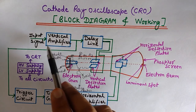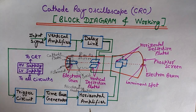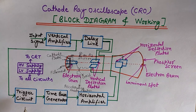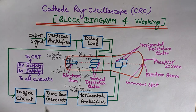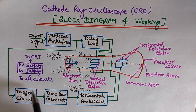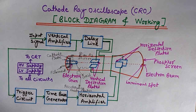After the delay line, the input signal is applied to the vertical deflection plates. The trigger circuit is provided for synchronizing the two types of deflections — vertical deflection and horizontal deflection — so that the horizontal deflection starts at the same point of the input vertical signal each time it sweeps. Synchronization is the purpose of the trigger circuit.